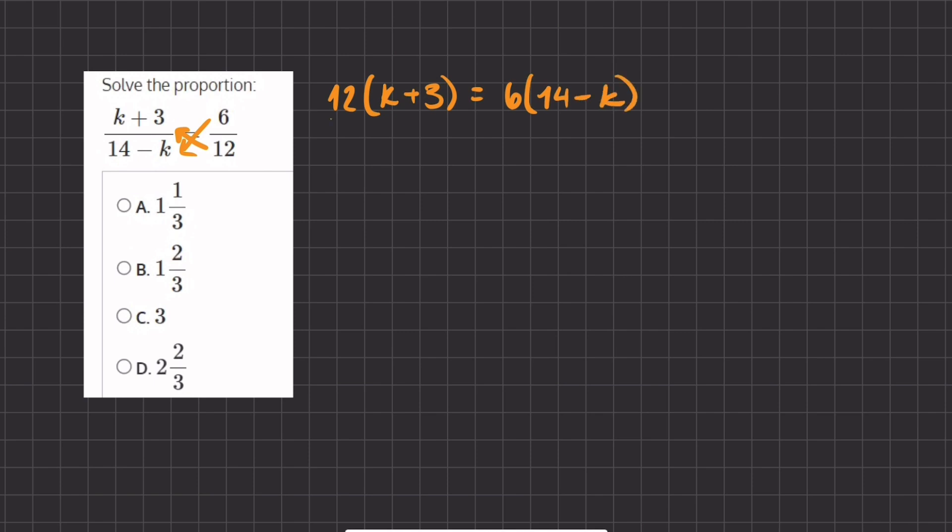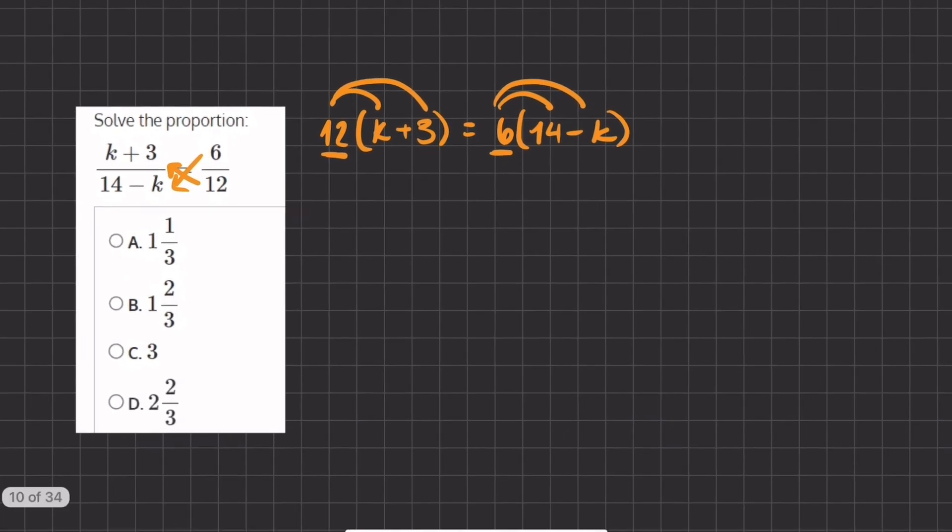Now we can distribute this value into our parentheses, and same for the 6. When we distribute, we have 12 times k, which will give us 12k, and 12 times 3, which will give us 36.